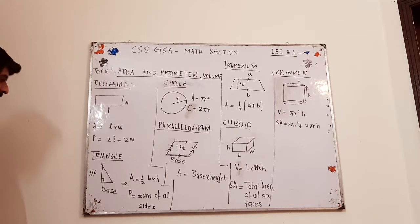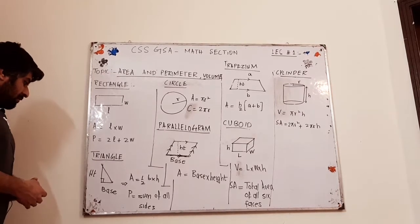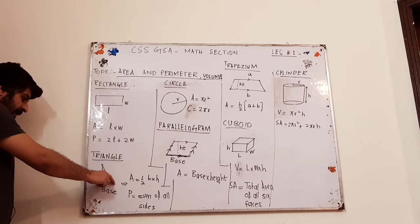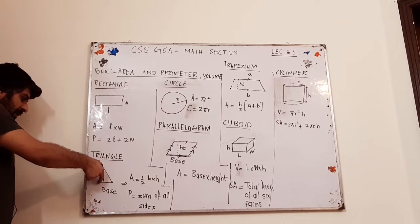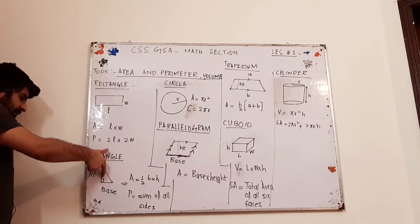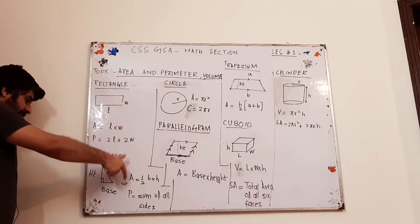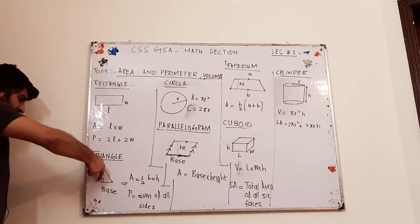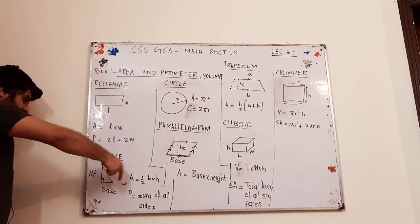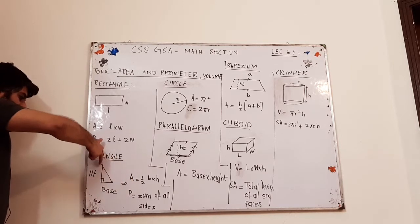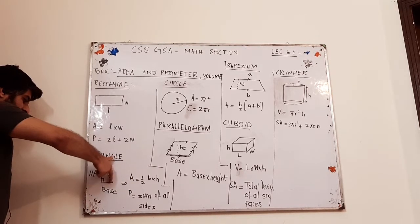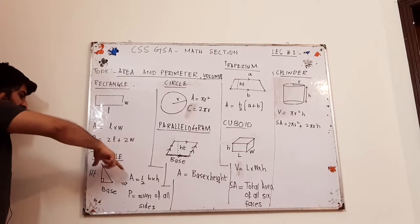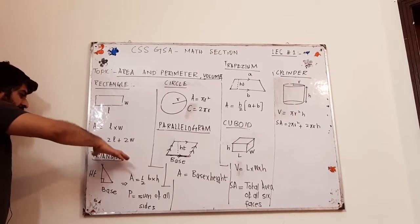The next shape is triangle. A triangle has got a base and a height. For a right triangle, the area will be half base into height. The perimeter is obtained by adding the lengths of all three sides.